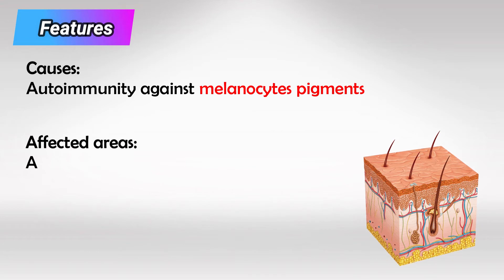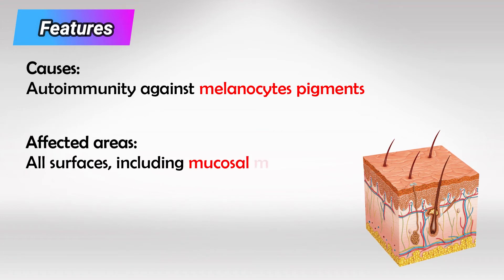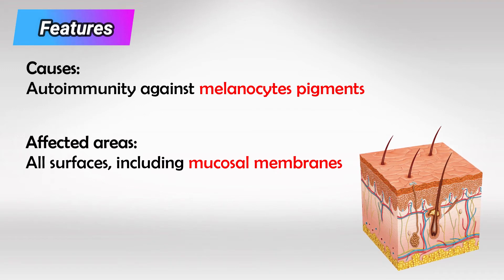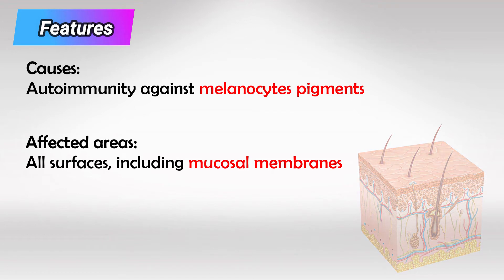This affects all surfaces in the body, including the skin and all mucosal areas, such as the mouth and the inner lining of the genital tract. What causes the disease to start is still unclear, but patients normally start having symptoms about the second or third decade of life.